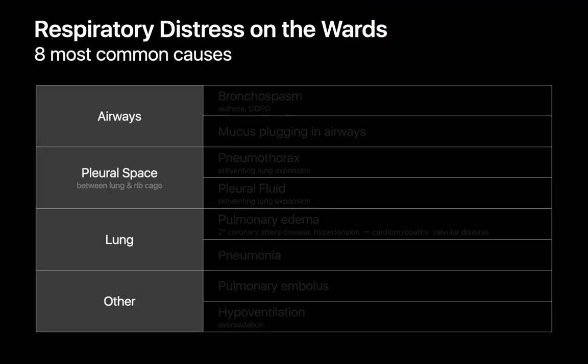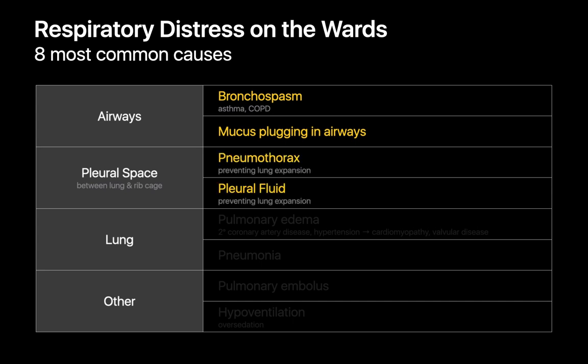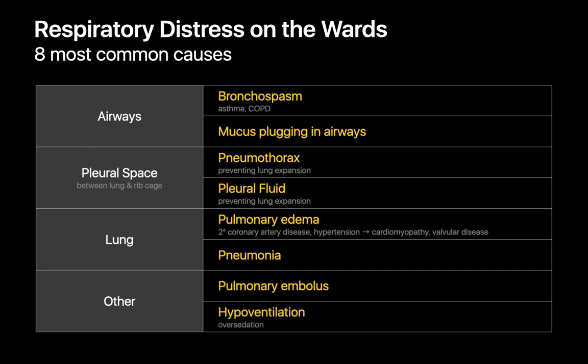The eight causes fall into two airway issues, two pleural issues, two lung issues, and two additional issues. Those are: bronchospasm in asthma exacerbation or COPD; mucus plugging; pneumothorax; pleural fluid preventing lung expansion (which may be an effusion, hemothorax, or other fluid); pulmonary edema; pneumonia; PE; and hypoventilation — most often in the setting of over-sedation.